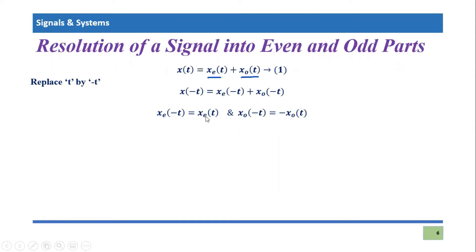The criterion of an even signal is x_e(-t) = x_e(t). Similarly, for an odd signal, x_o(-t) = -x_o(t). So for the odd part it will be x_o(-t) equals minus times x_o(t).